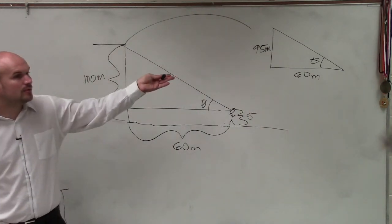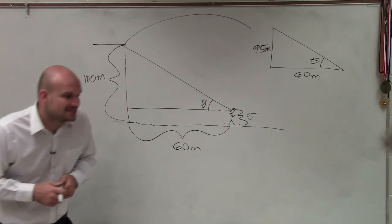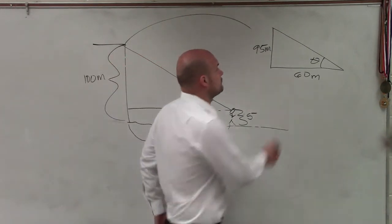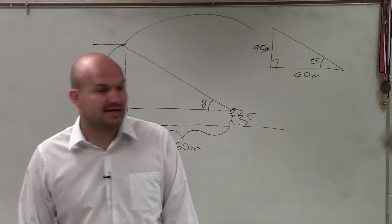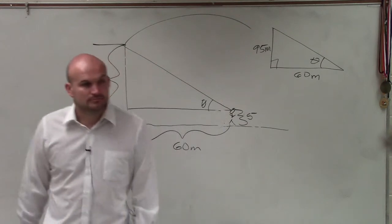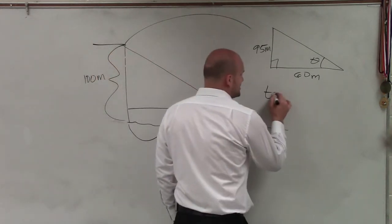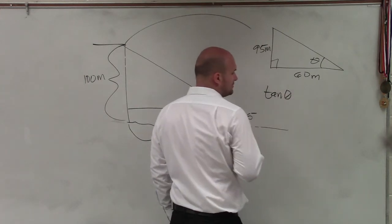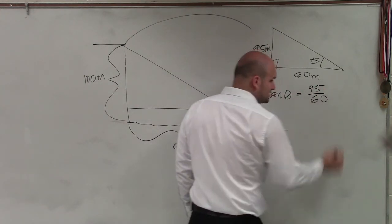Okay, so now we have a triangle - a right triangle I may add - and now we need to figure out the angle. So Oscar, which trigonometric function only deals with the opposite side and the adjacent side? The tangent function. So you can say the tangent of our angle is equal to 95 over 60.